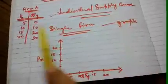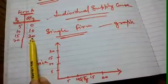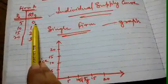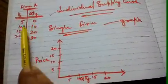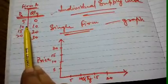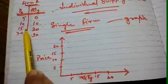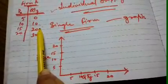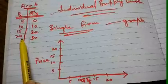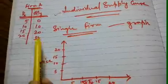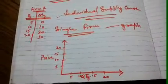For the individual supply curve, we are following Firm A's data. When the price was rupees 5, the firm was not ready to sell anything. When the price rose to rupees 10, the firm supplied 10 units. At rupees 15, it was ready to supply 20 units. When the price was rupees 20 per product, the firm supplied 30 units. Now we are going to plot this data of Firm A — that means we are constructing the individual supply curve.